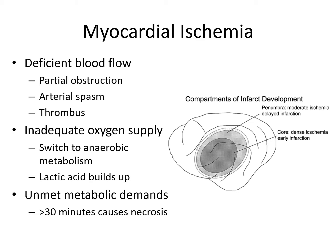Anaerobic metabolism causes lactic acid to build up in the cells. It also affects cell membrane permeability, releasing substances such as histamine, kinins, and specific enzymes that stimulate nerve fibers in the cardiac muscle and send pain impulses to the central nervous system. More than 30 minutes of ischemia irreversibly damages the myocardial cells, leading to necrosis.